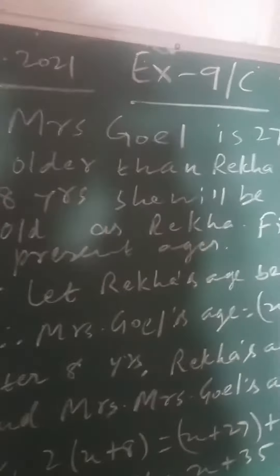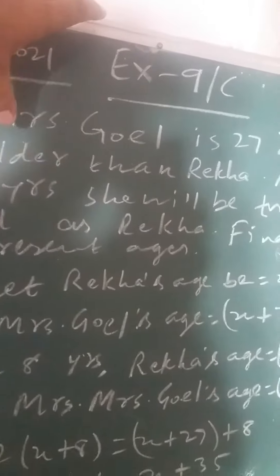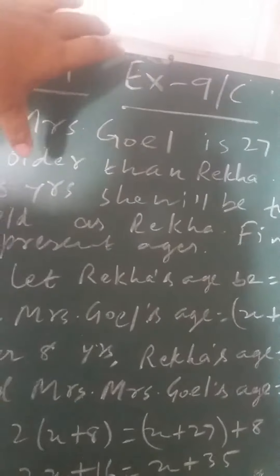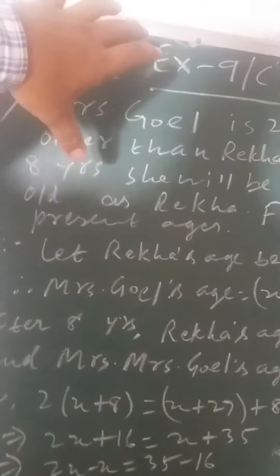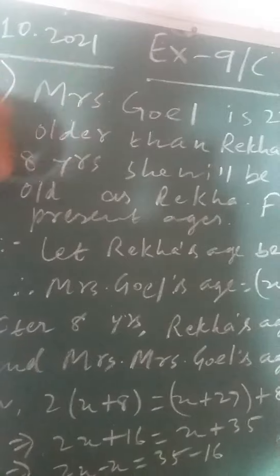Mrs. Goyal is 27 years older than Rekha. After 8 years, she will be twice as old as Rekha. Find their present ages.